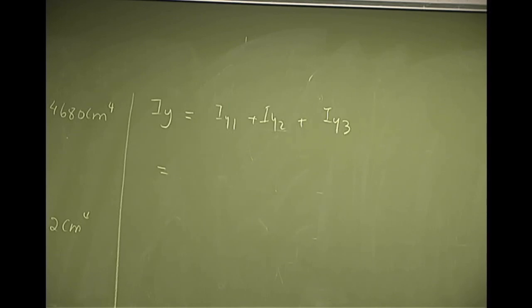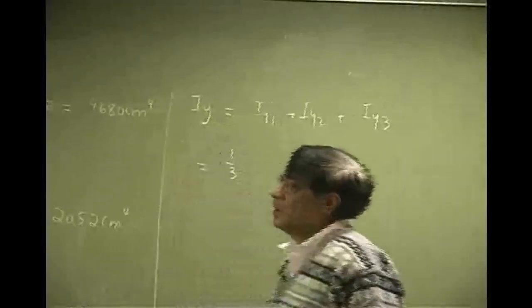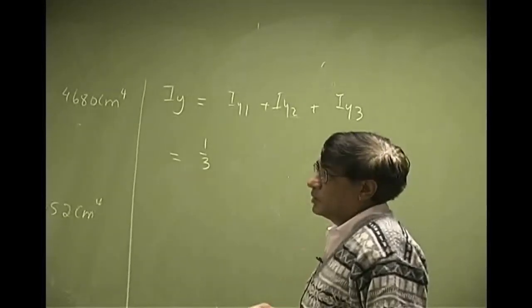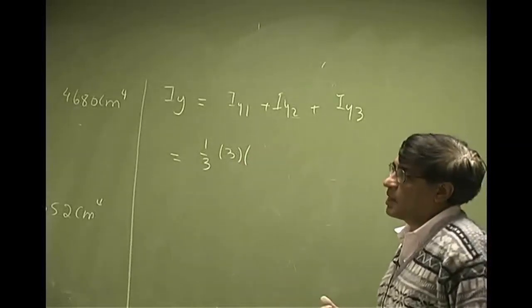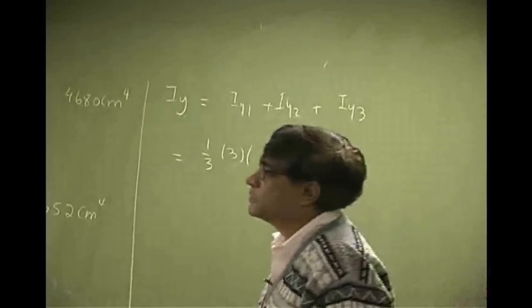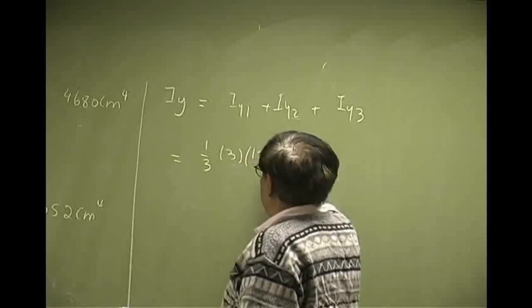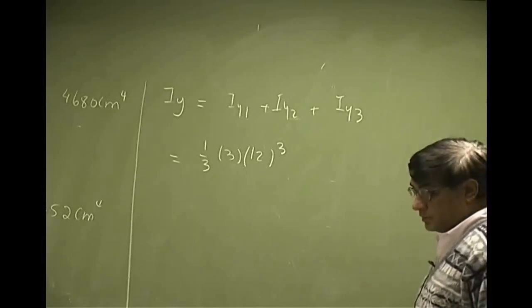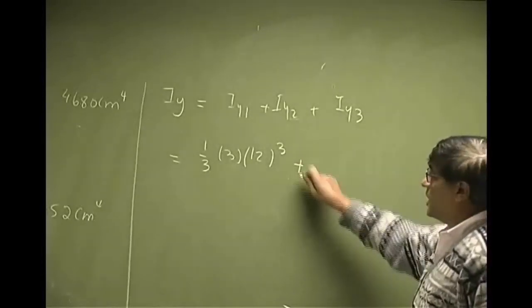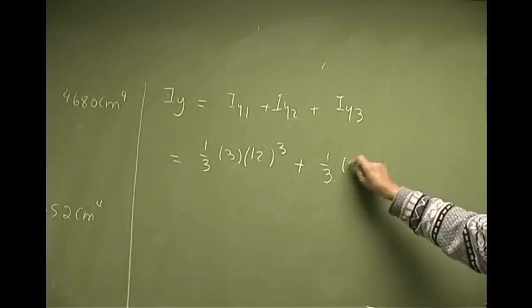Now, what is Iy1? You are looking at this rectangle. You are looking at this axis. So the formula which you should use is 1/3. You need the B, which is 3. You need the H, and H was 12. So that's the first one. The second one, again, you are going to use the formula with 1/3.